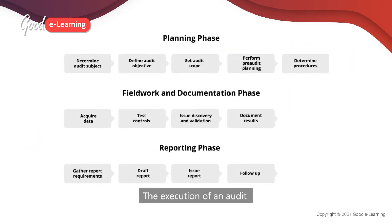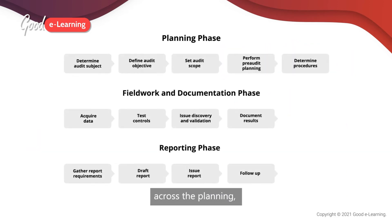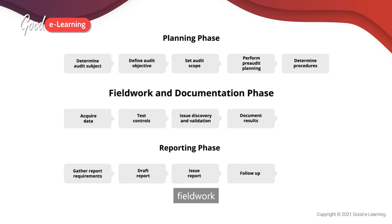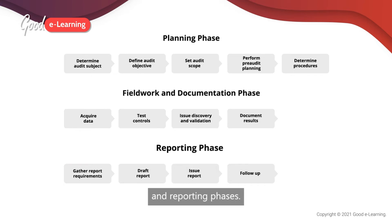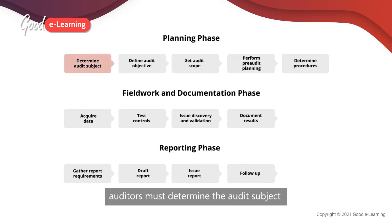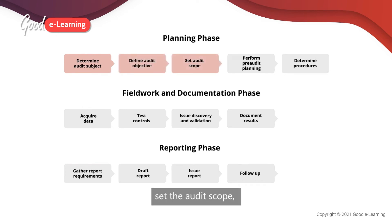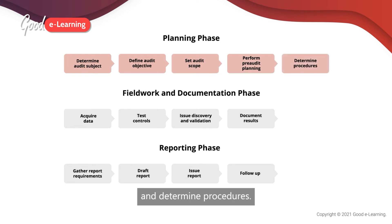The execution of an audit is divided into various steps across the planning, field work, and reporting phases. In the planning phase, auditors must determine the audit subject and define the audit objective, set the audit scope, perform pre-audit planning, and determine procedures.